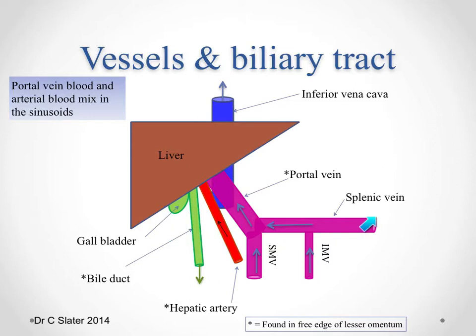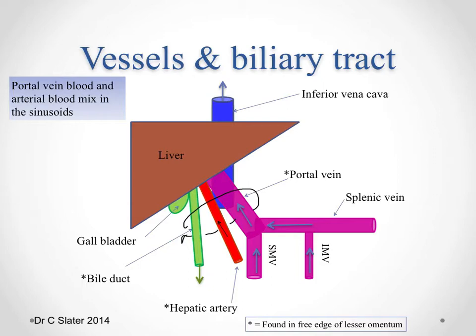The splenic vein and the portal vein drain the derivatives of the foregut directly into the portal system. Running posterior to the liver is the inferior vena cava, bringing systemic venous blood from the rest of the body. As a reminder, the biliary system, the arterial system, and the portal vein — these three structures run in the free edge of the lesser omentum, which runs as a layer of double peritoneum going from the liver down to the stomach and the lesser curvature of the stomach.